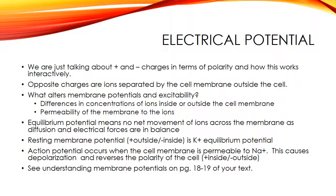Movement of materials across the cell membrane is needed for survival. Diffusion is a process by which substances such as ions move down a concentration gradient from an area of higher concentration to an area of lower concentration. Osmosis is the diffusion of only water molecules through a membrane down the concentration gradient for water — from where water is more concentrated with fewer solutes to where water is less concentrated with more solutes. Protein-assisted diffusion allows small hydrophilic substances such as ions or glucose to cross the cell membrane with the assistance of a transport protein — a channel or carrier protein.